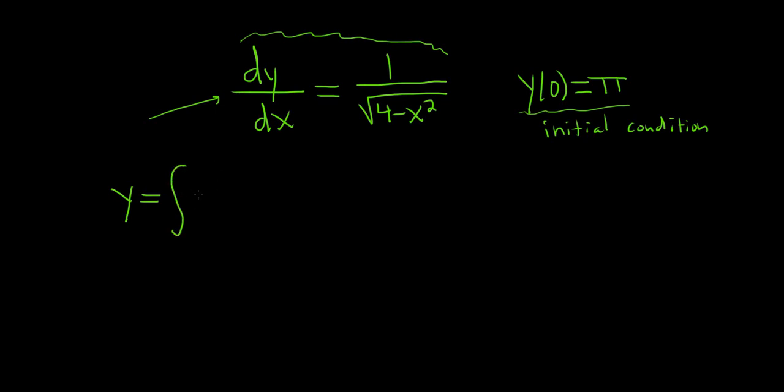And now we have to integrate this function here: 1 over the square root of 4 minus x squared dx.